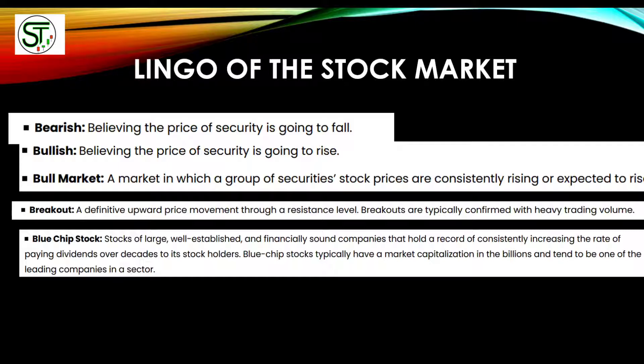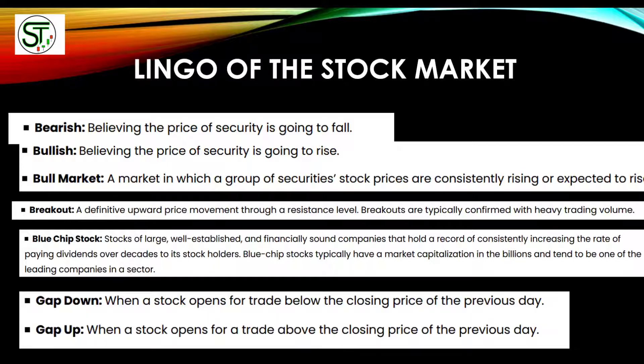Blue chip stocks are very large, well-established, financially sound companies that have a record of consistently paying or increasing dividends over decades. They typically have market capitalizations in the billions and are leading companies in their sector. Examples in the tech sector include Microsoft, Google (Alphabet), and Apple. These are typically safer than newer or smaller companies.